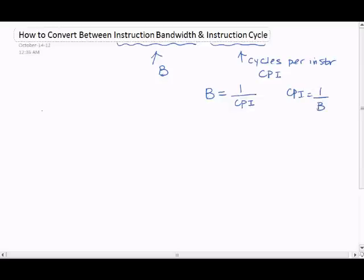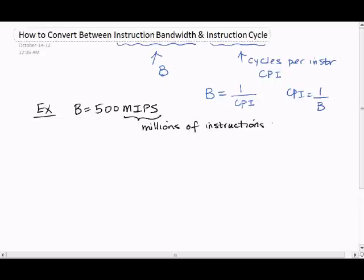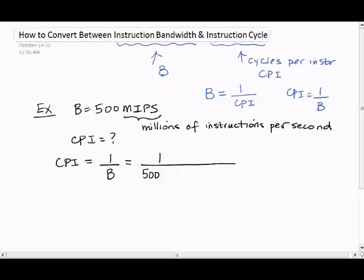Let's do some examples. Suppose your bandwidth is 500 MIPS. MIPS is millions of instructions per second. So what is your CPI? How many cycles does it take for instructions to be completed from this type of processor? The CPI is equal to 1 over the bandwidth.